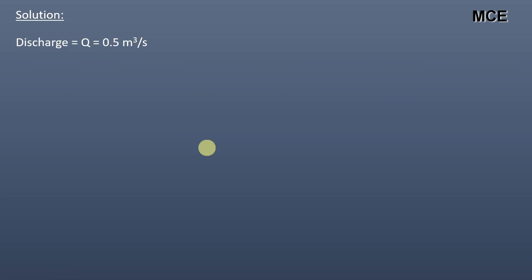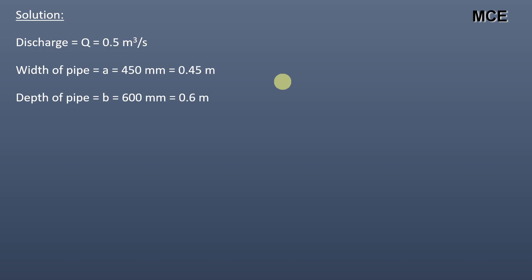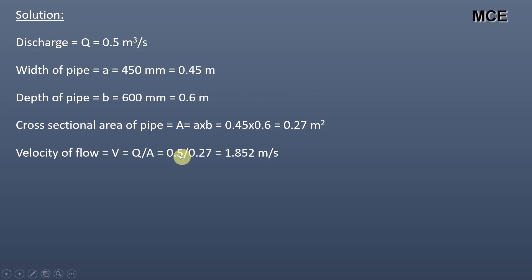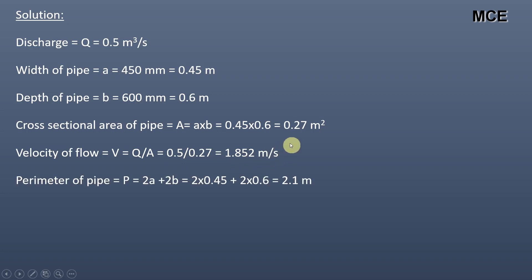First, we will see what is given in the question. Discharge is given as 0.5 meter cube per second. Width of pipe is given as 450 mm or 0.45 meter. Depth of pipe is given as 600 mm or 0.6 meter. Cross-sectional area of pipe is given as width into depth, which is equal to 0.27 meter square. Velocity of flow is given as discharge per unit area, which equals 0.5 divided by 0.27, equal to 1.852 meter per second.